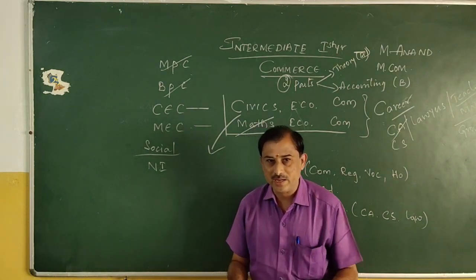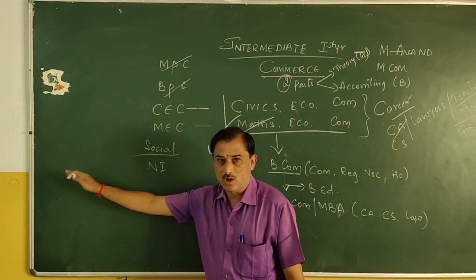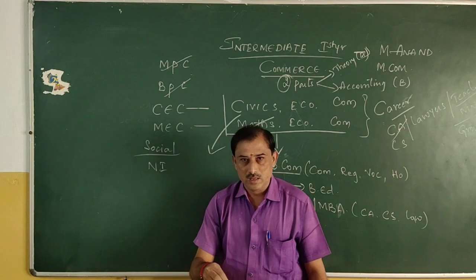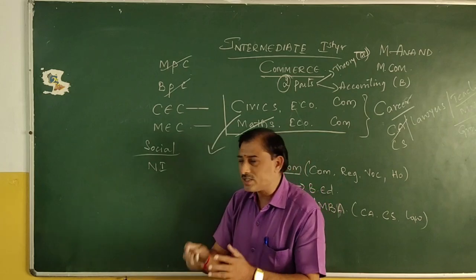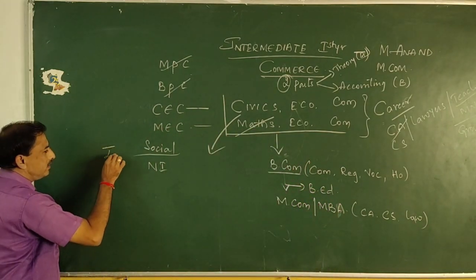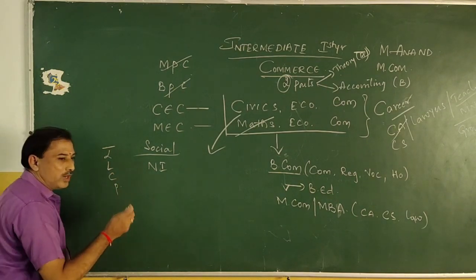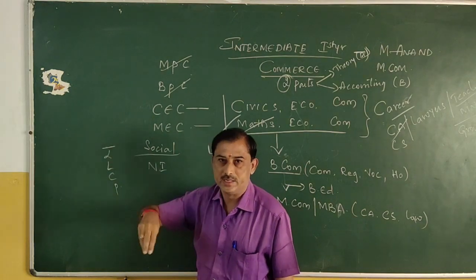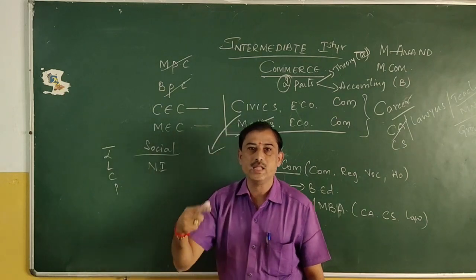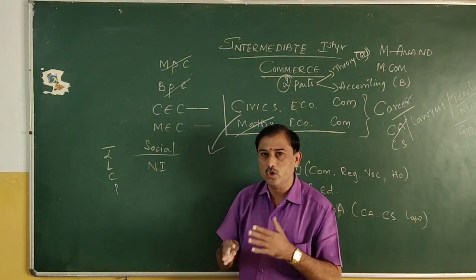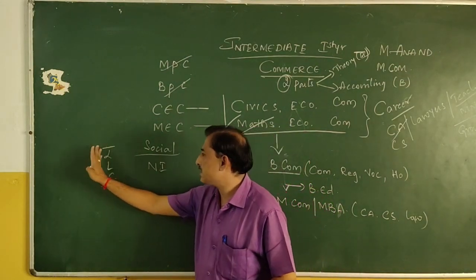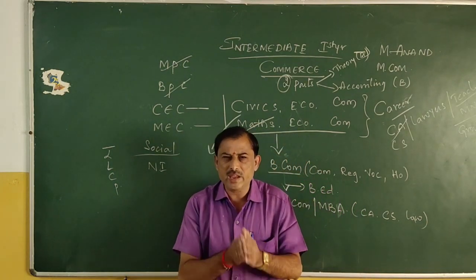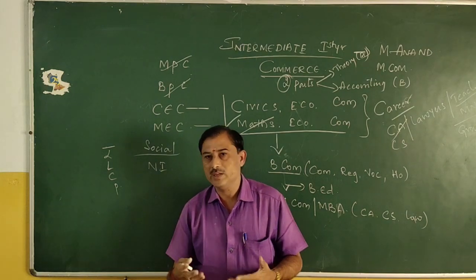We study demand and supply. A businessman produces an article, incurring costs on land, labour, capital, and profit. Once manufactured, how do you see the demand for that commodity in the market? How you distribute profit among factors of production — land, labour, capital, and organization — and how a human behaves rationally regarding these factors is what you study in Economics.